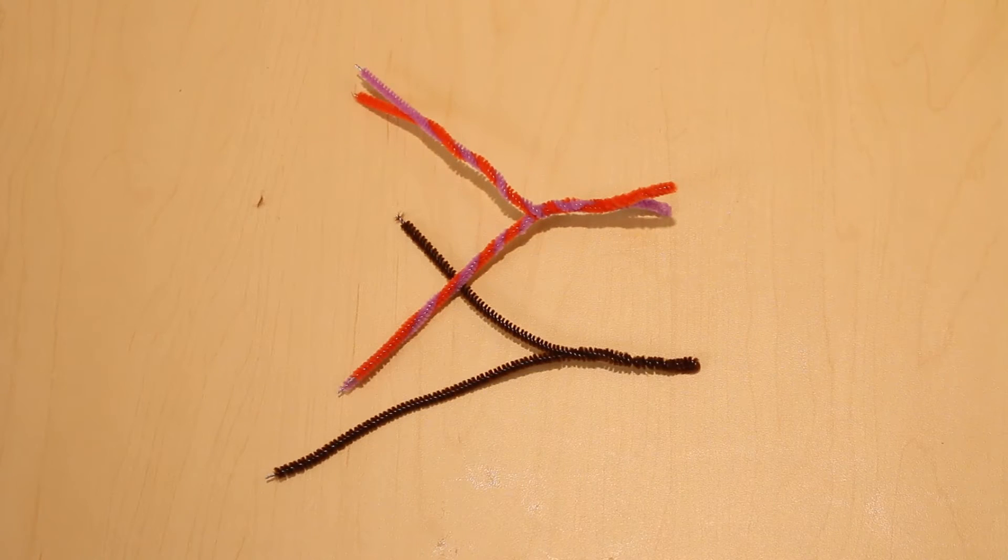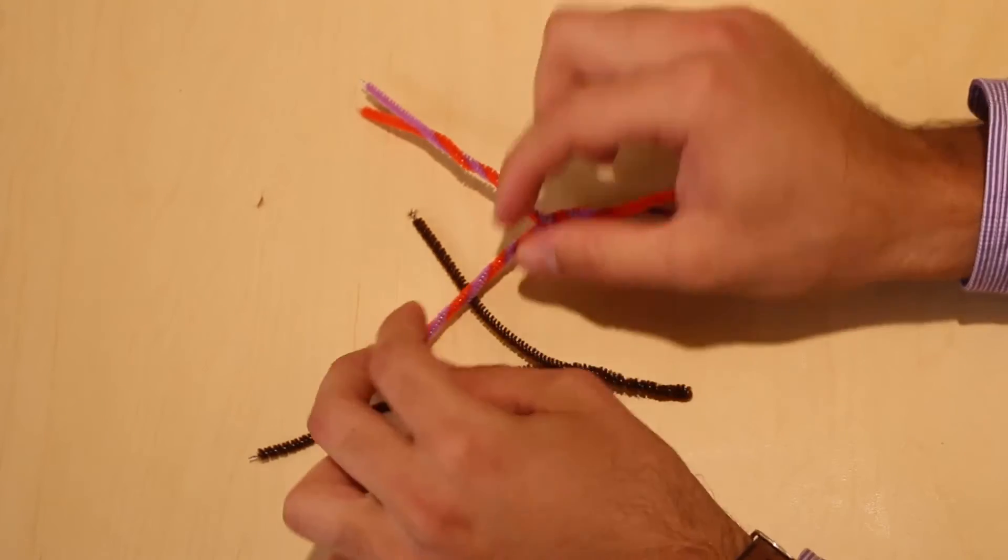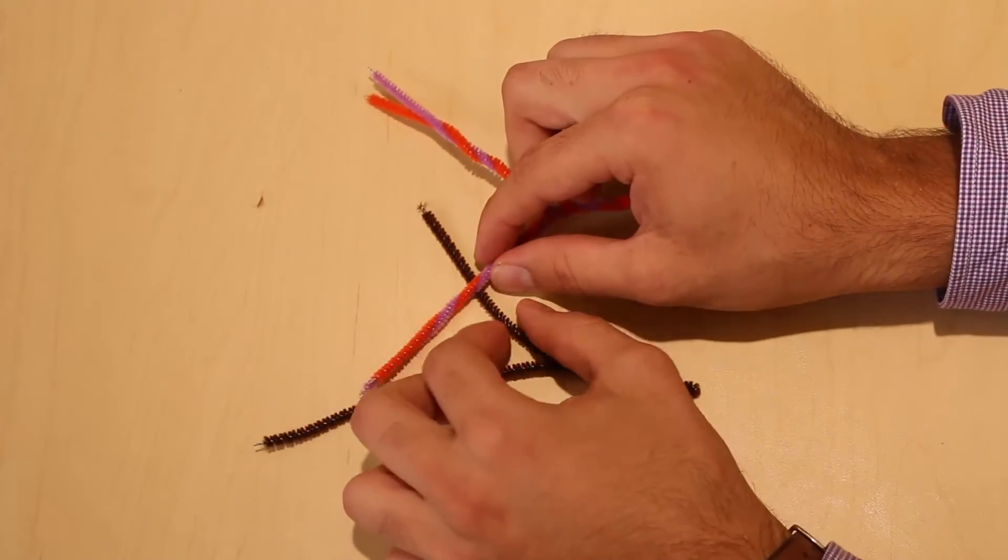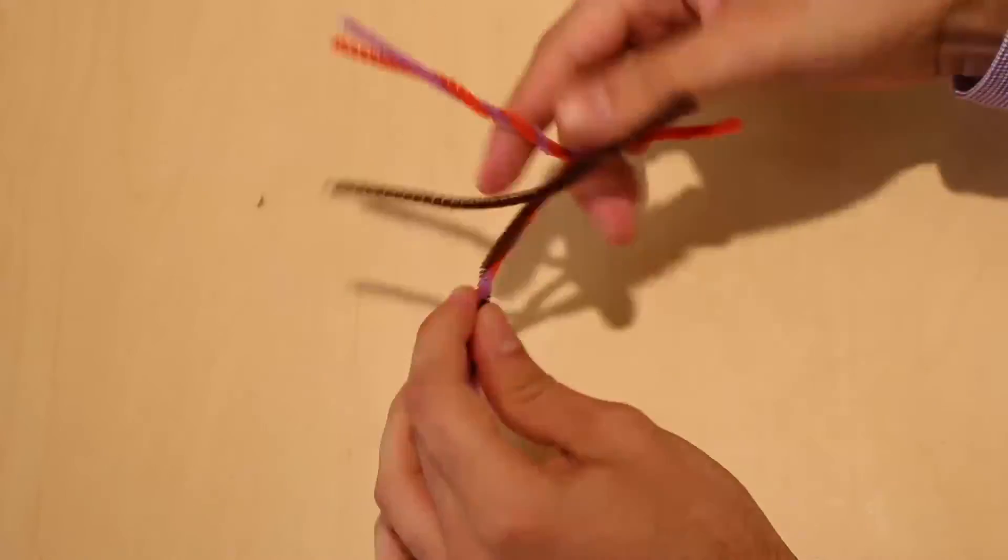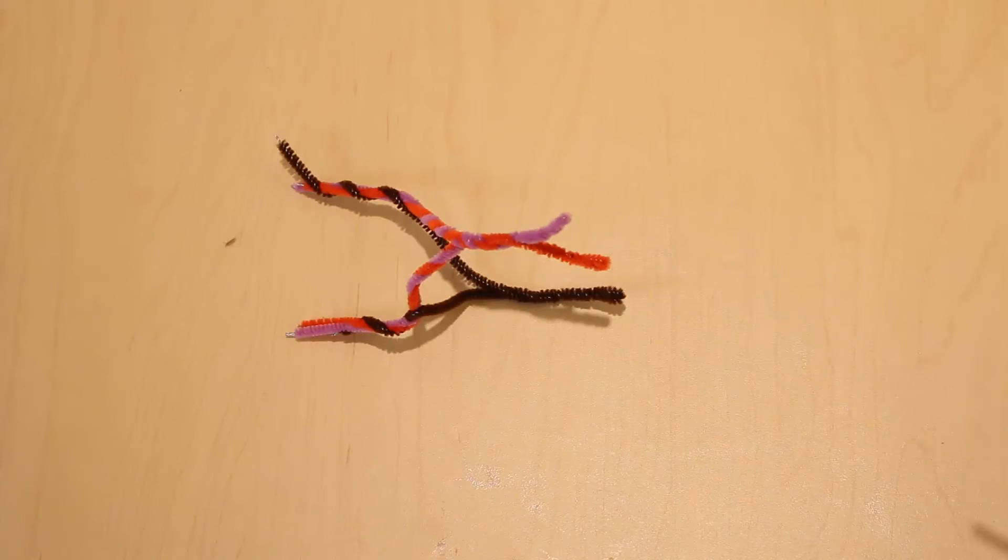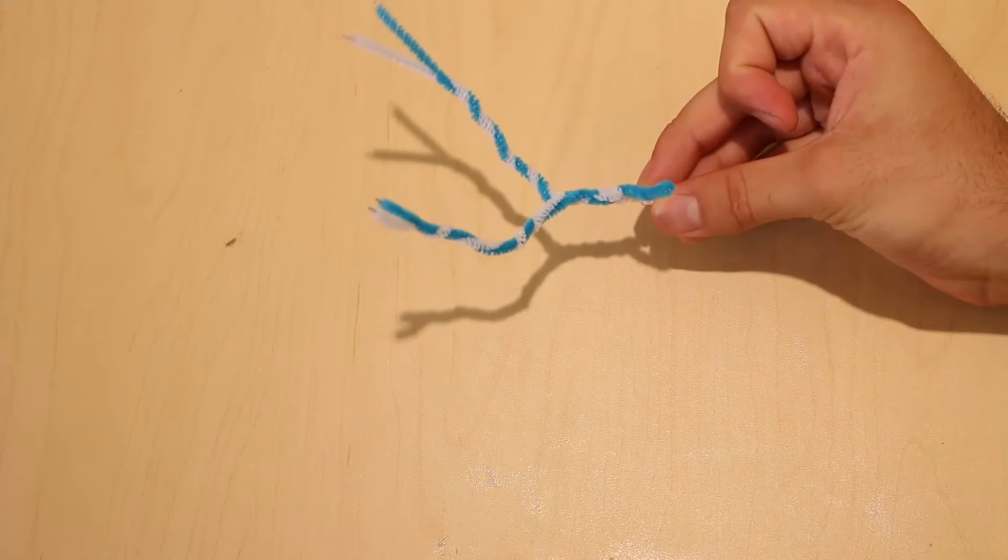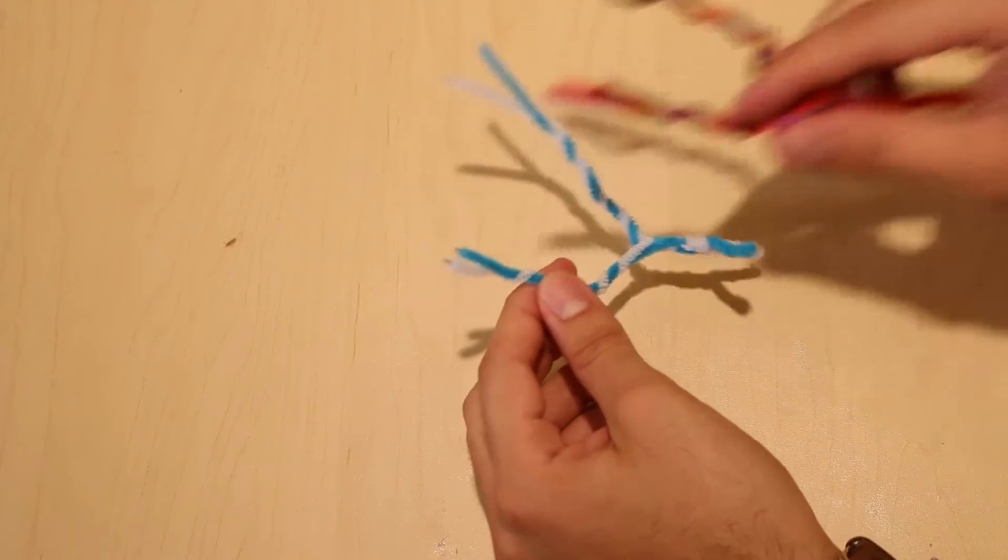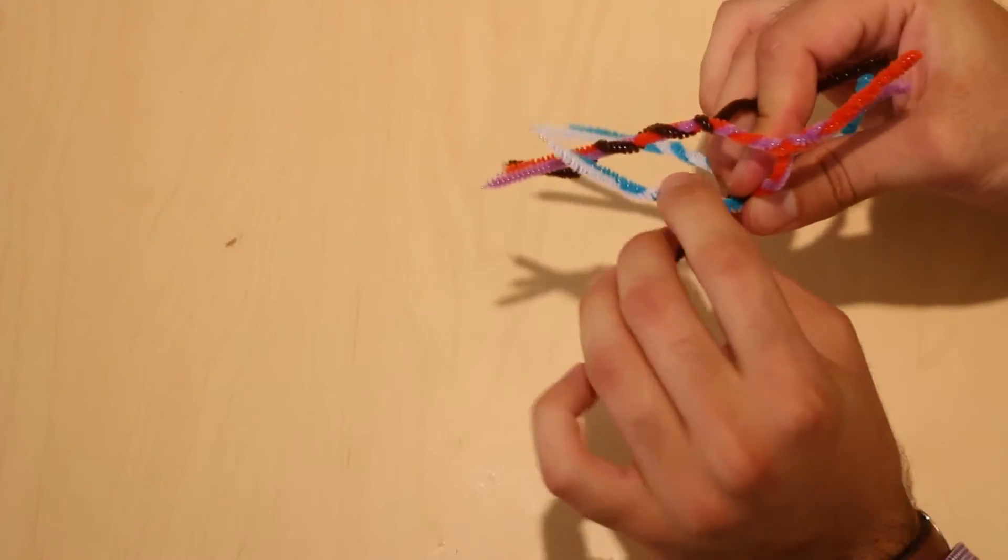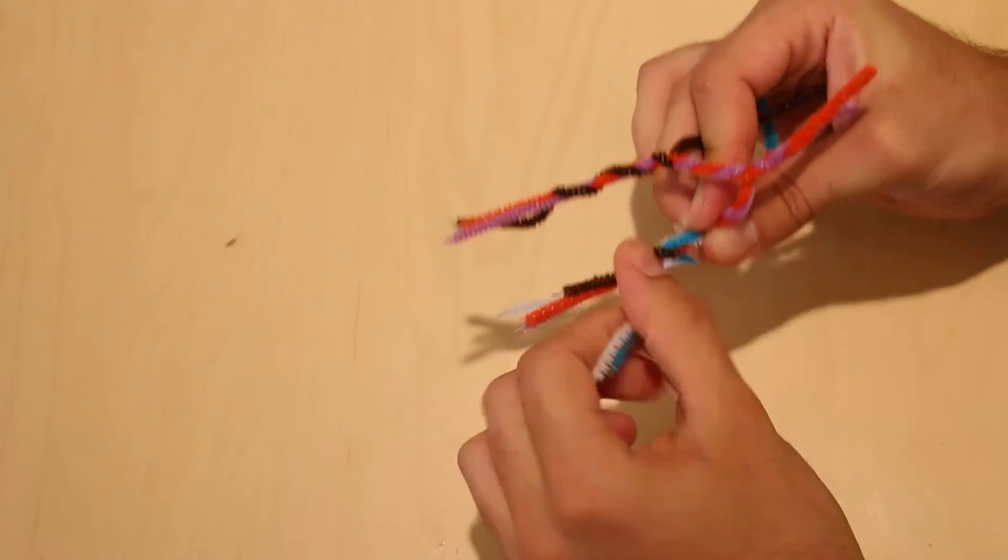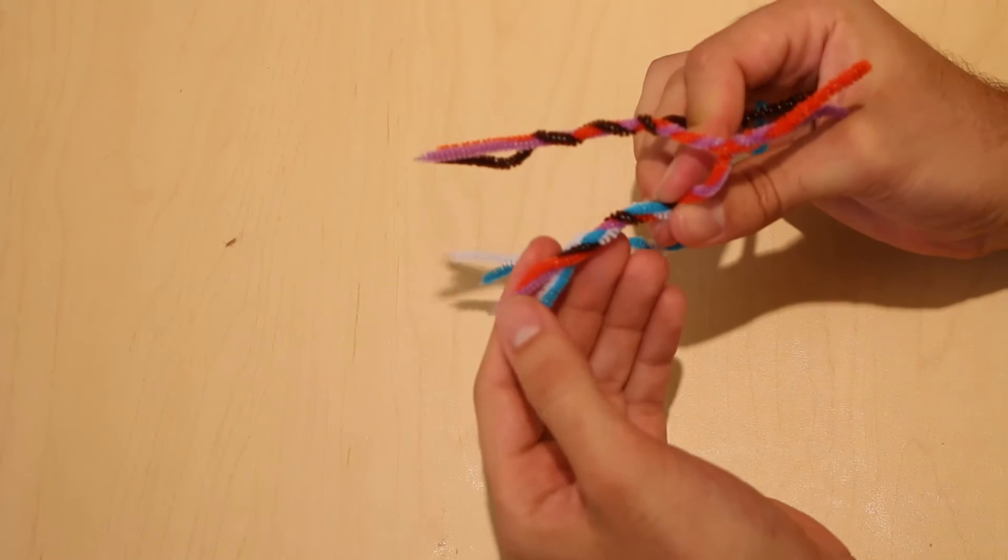Now, moving back to our superior trunk, we are going to see that the posterior division is going to move down and merge with the posterior division of the middle trunk. Then, our inferior trunk, the posterior division, is going to meet on and hook up with the posterior divisions of the middle and superior trunk. This forms the posterior cord.